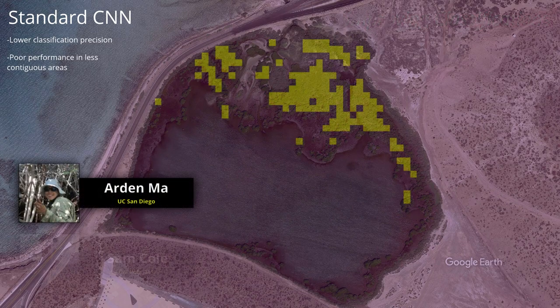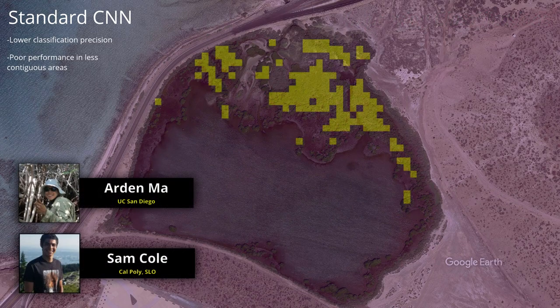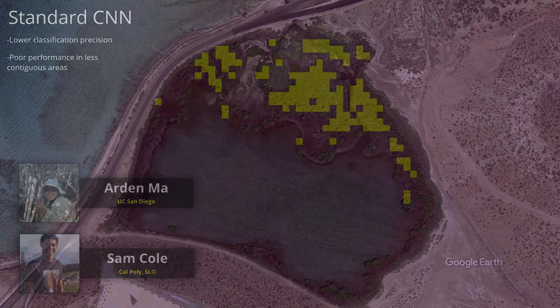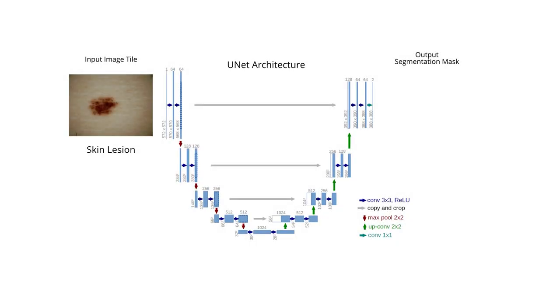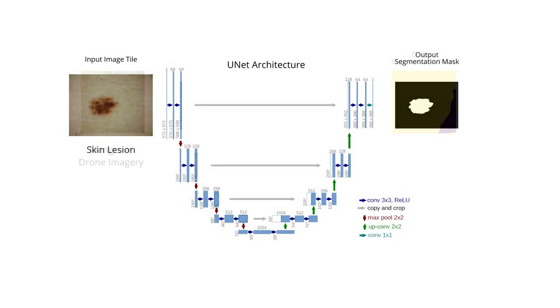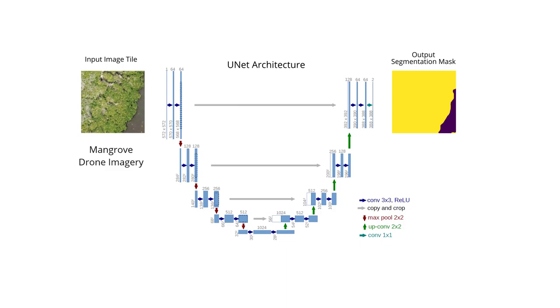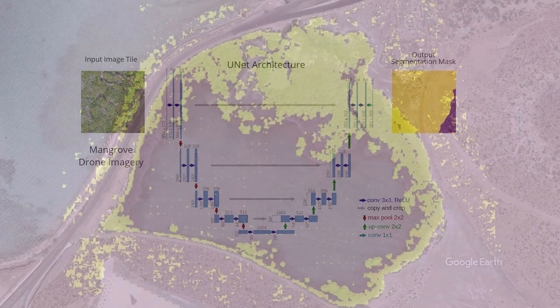Thus, Arden Ma and myself, Sam Cole, used a U-Net, which originally was designed for biomedical applications, and applied it to classifying mangrove land areas.